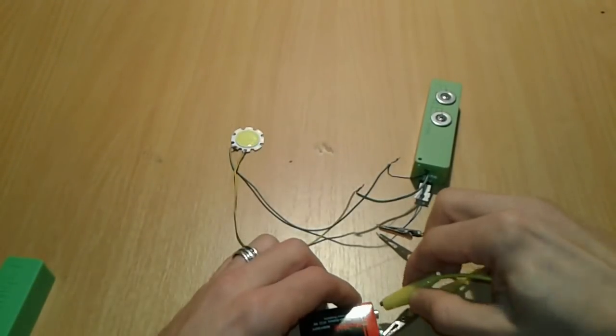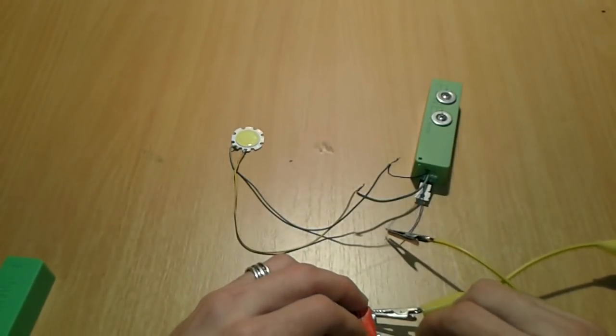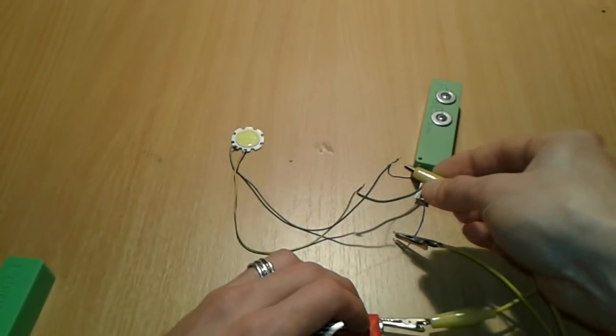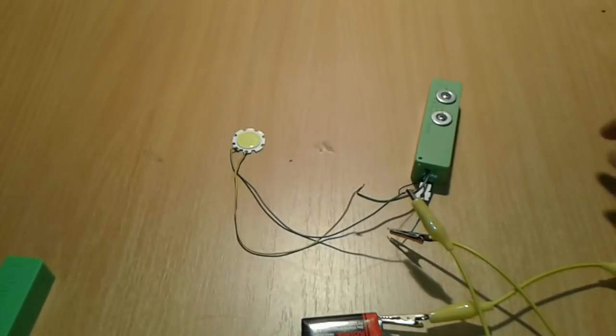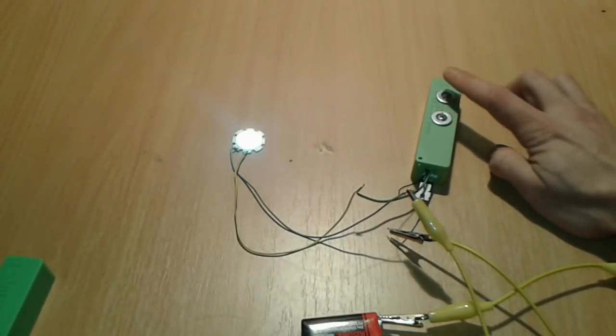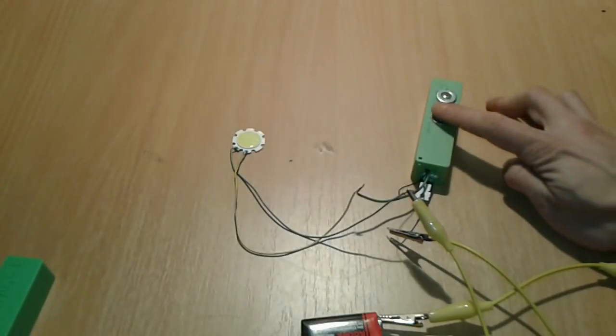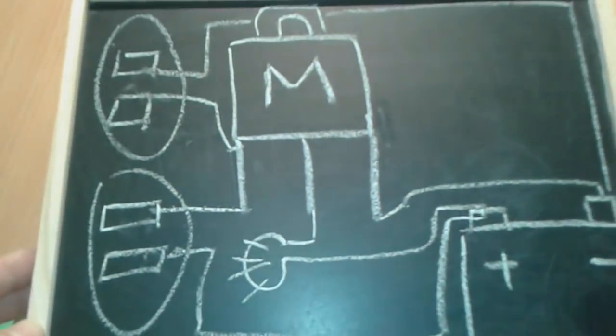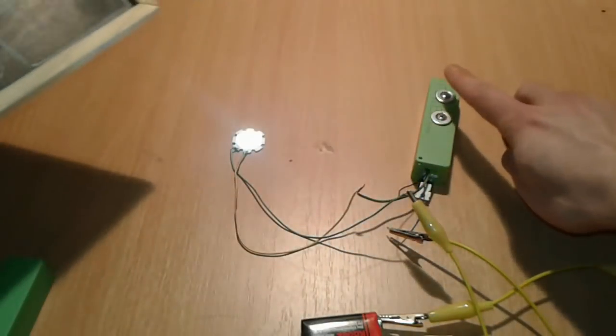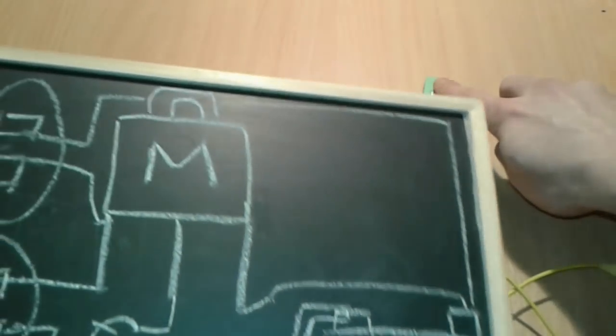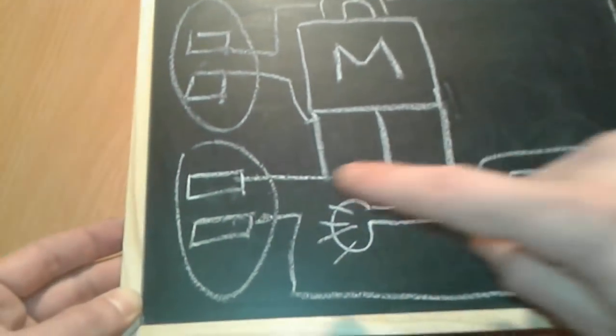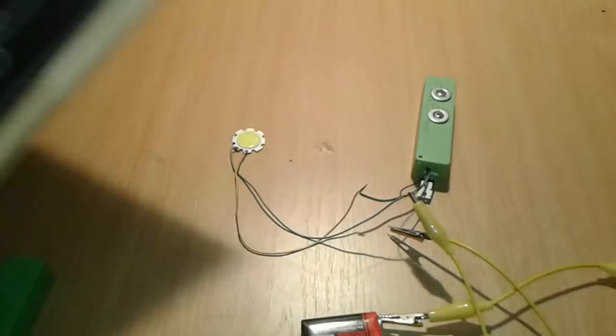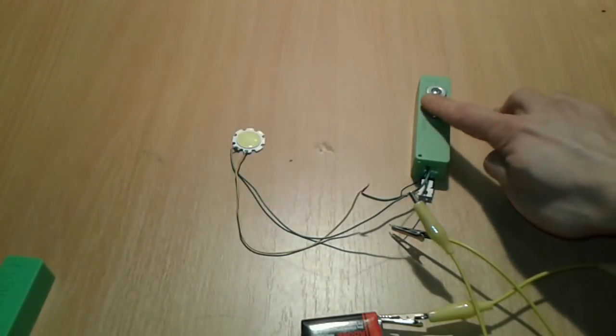And we're going to take another crocodile clip or alligator clip and go to the positive, the black one in our case. This one should be working. On, off, on, off, on, off. Once again, if you want to see the diagram, this is it. On, off, on.